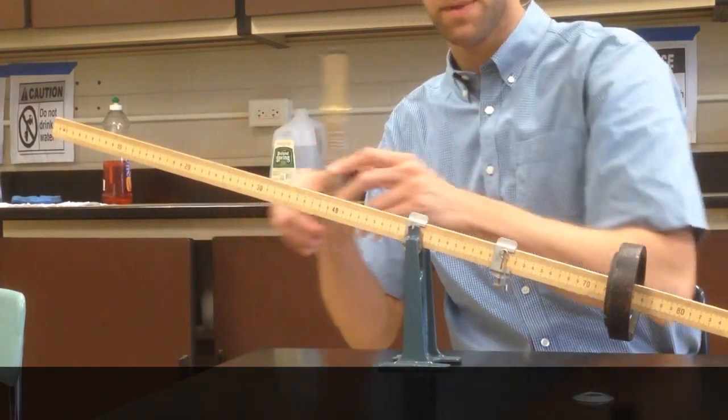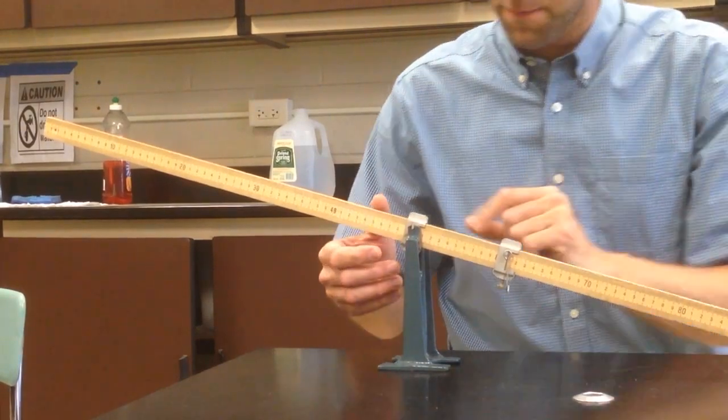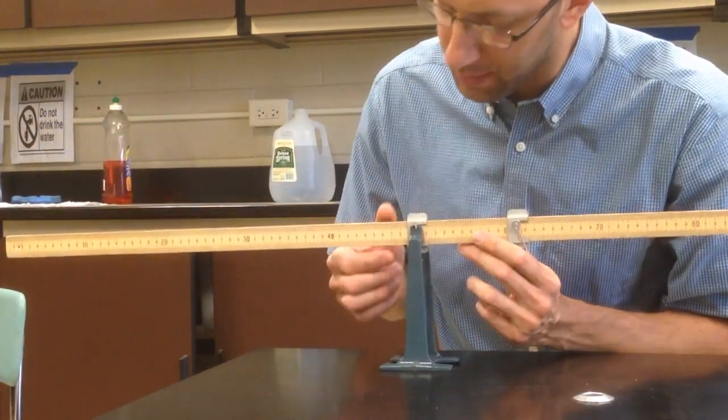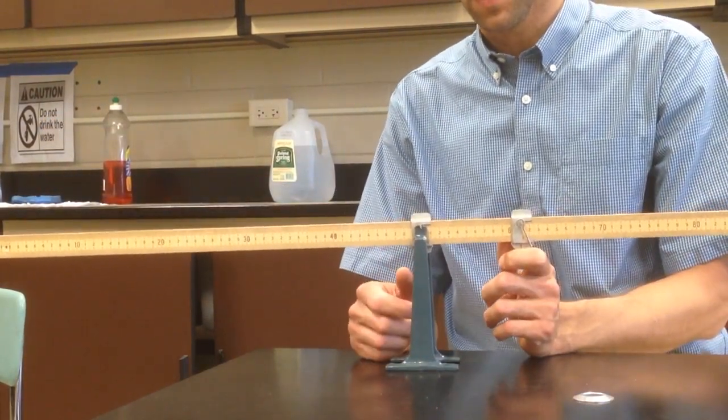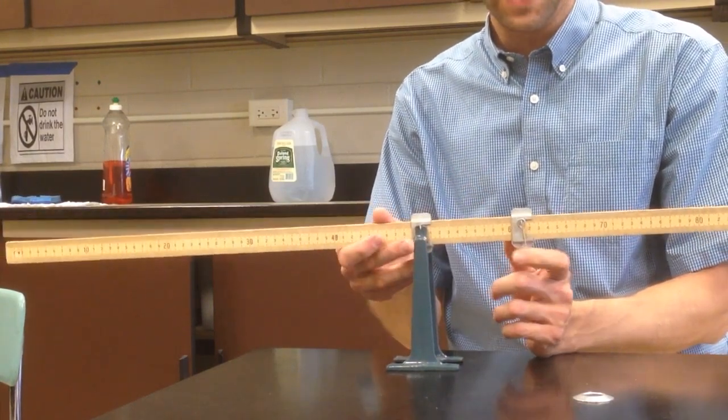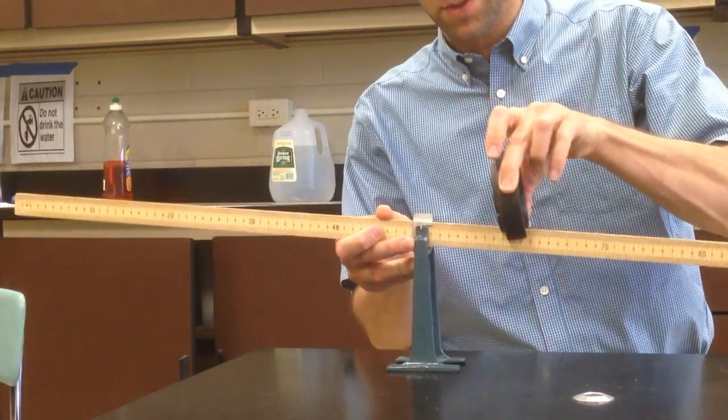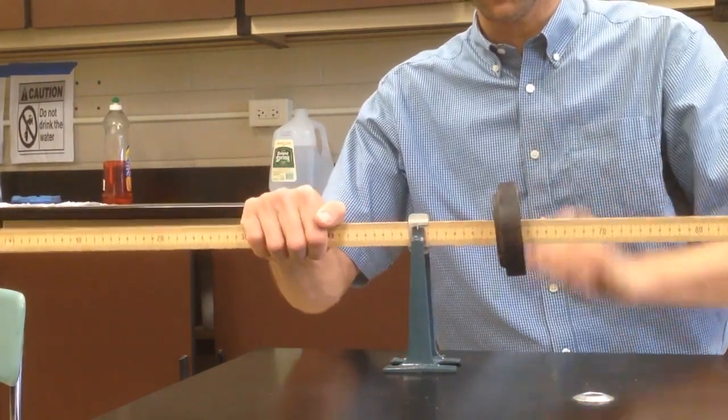The other tricky thing about setting up this lab is that your fulcrum is set up at 50 centimeters. You're going to compare the distance that your weight is from the fulcrum. So your weight could be at 60 centimeters, which is 10 centimeters from the fulcrum.